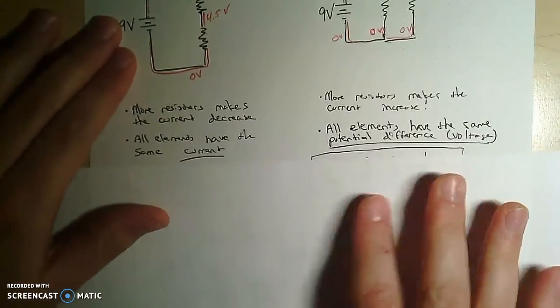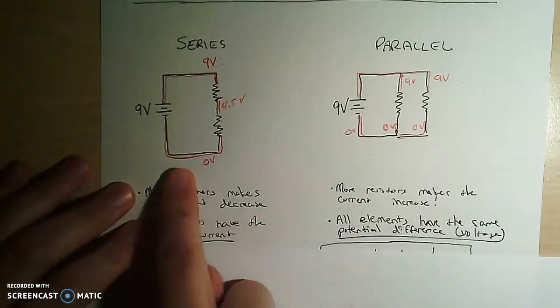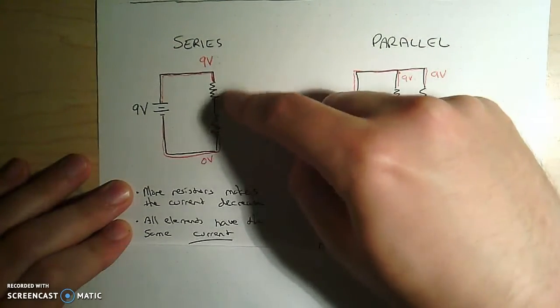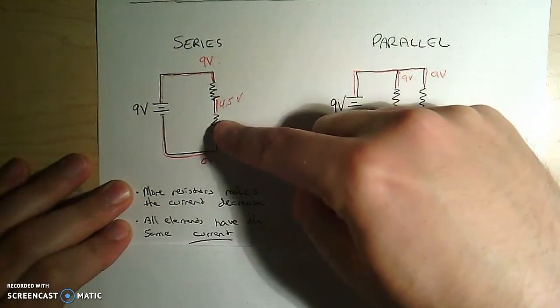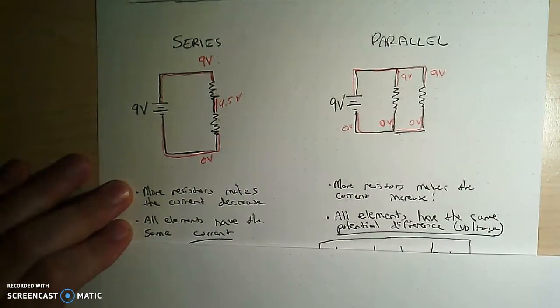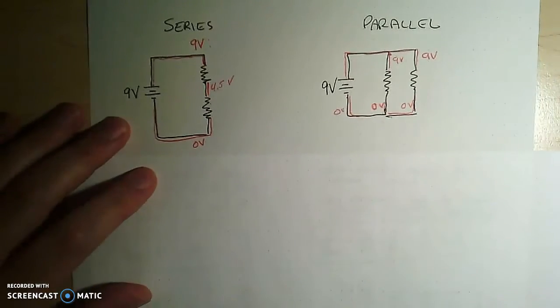Remember, we said that in a series circuit, the current is the same everywhere, but the voltage has to, like the voltage of the battery has to be shared between all resistors, right? So let's look at what that means.